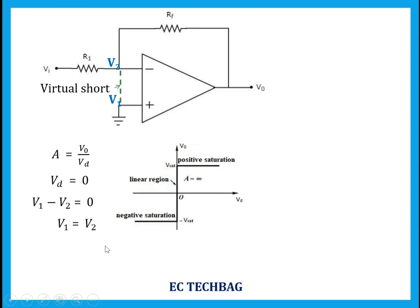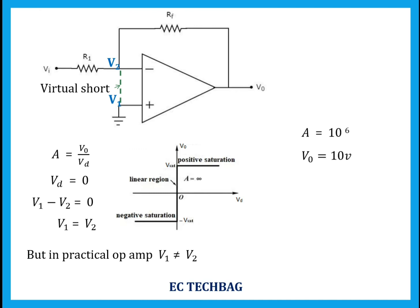This is possible in an ideal operational amplifier, but in a practical operational amplifier V1 is not exactly equal to V2. In a practical operational amplifier the gain value is very high, in the range of 10⁵ to 10⁶. Taking a gain value of 10⁶ and a particular output voltage V0 of 10 volts, from the equation VD equals 10 divided by 10⁶.